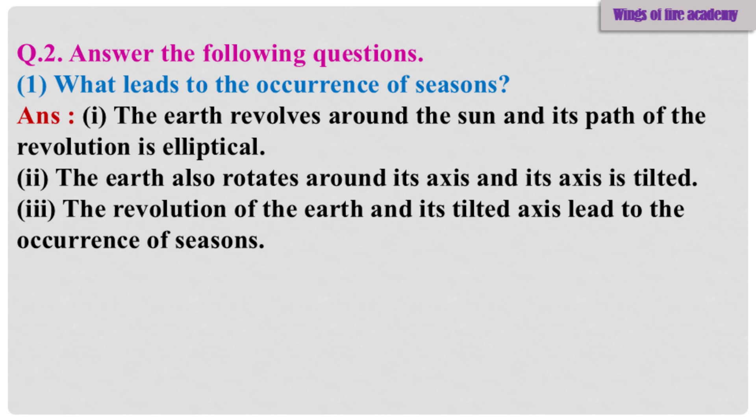Question 2: Answer the following questions. Sub-Question 1: What leads to the occurrence of seasons? Answer: 1. The earth revolves around the sun and its path of revolution is elliptical. 2. The earth also rotates around its axis and its axis is tilted. 3. The revolution of the earth and its tilted axis lead to the occurrence of seasons.